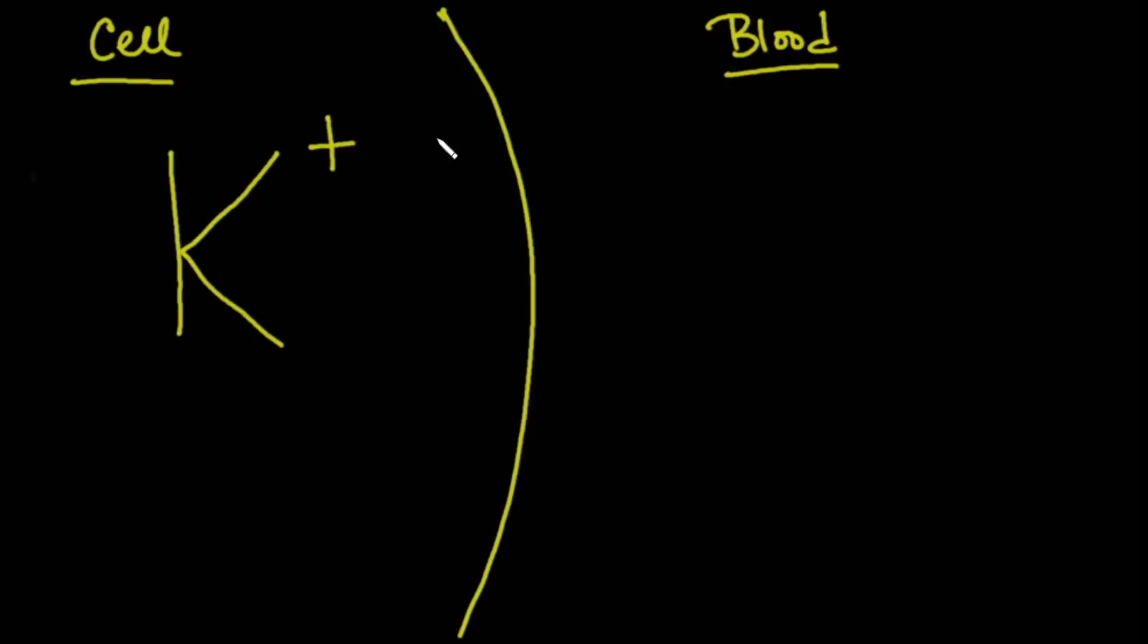So let's talk about what goes on inside the cell, and that will give us information about what's going on. So here's the cell, and here's outside the cell, the blood. We'll abbreviate potassium as K+, and generally there's a lot of potassium stored inside the cells, and a small relative amount of potassium outside the cells.